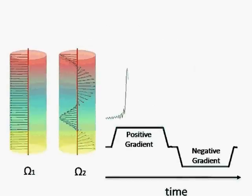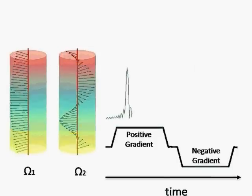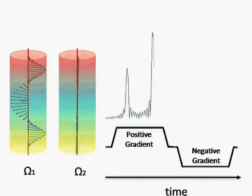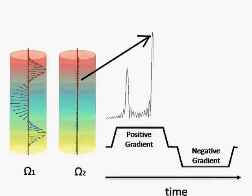Here we can observe how, when the spins of the first chemical shift align, an echo is formed. Here the spins of the second chemical shift align.